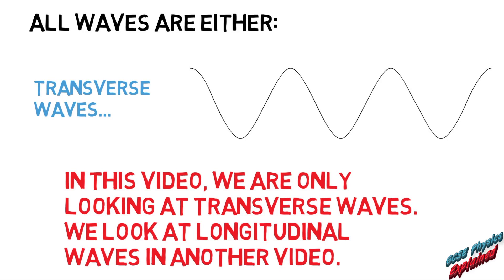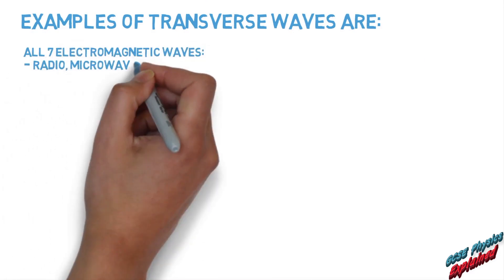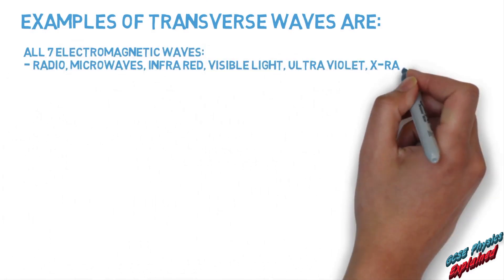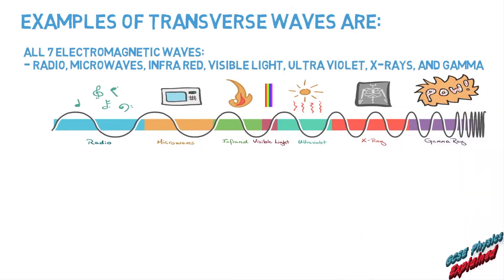Examples of transverse waves are all seven electromagnetic waves: radio, microwaves, infrared, visible light, ultraviolet, x-rays and gamma.